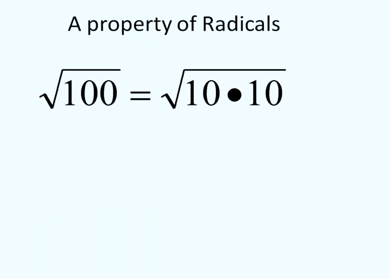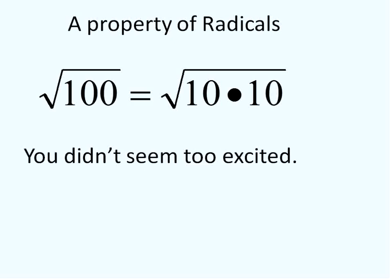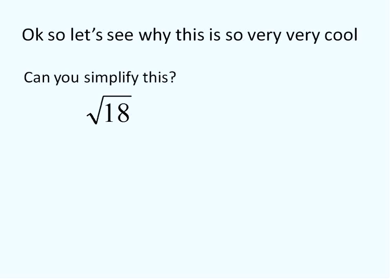Alright. A property of radicals. 100, the square root of 100 is equal to the square root of 10 times the square root of 10. You can factor what is underneath the square root. Isn't that cool? It's really exciting. You don't seem very excited about that. I'll show you why that's important here in just a second.